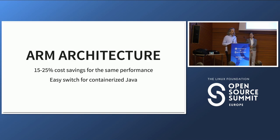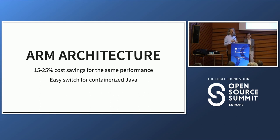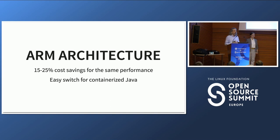We're switching to ARM architecture — you should too. We estimate 15 to 25% savings just by switching the images and nodes we use to ARM. For Java, this is very simple: your code will run on a JVM on ARM the same way as on Intel, unless you're doing something really special. You just switch the base Docker image and you're done — there's nothing else you need to do for your application.